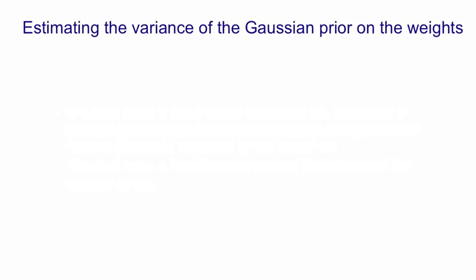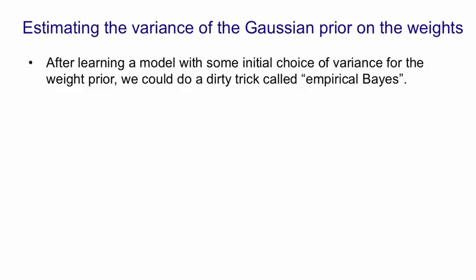We can also estimate the variance in the Gaussian prior for the weights. We have to start with some guess about what this variance should be, then we do some learning.